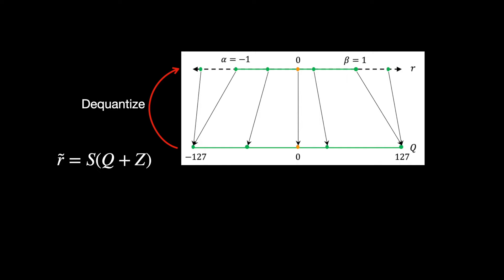Note the tilde on top of the recovered value r, meaning that it's only approximately equal to the actual value r. And so, we always have some quantization error, which is the difference between the actual and the dequantized value.